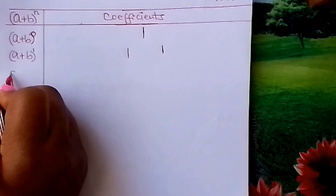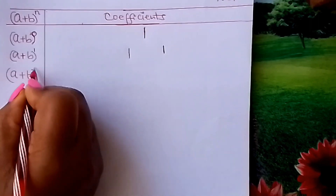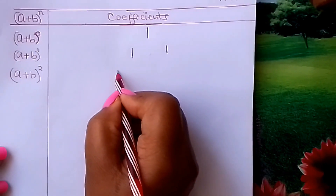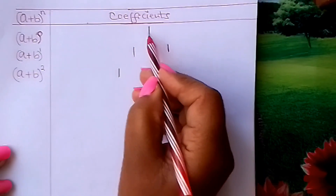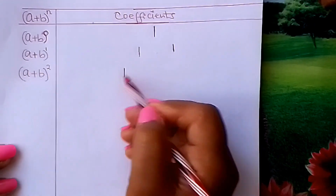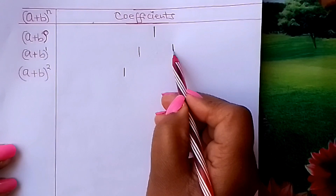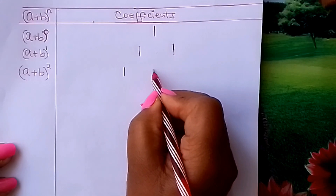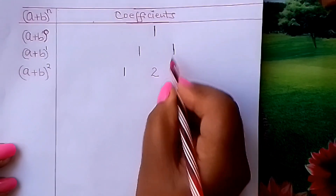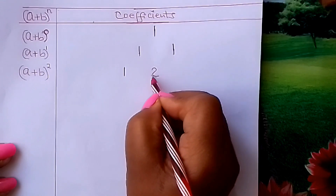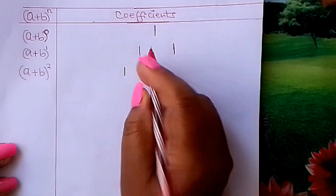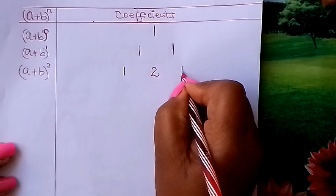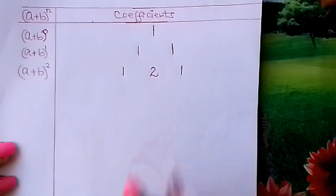(a + b) raised to 2 — what will it be? You come and start with your 1, and you maintain the slanting pattern of 1s there. Then add the 2 above: 1 plus 1 gives us 2. You come and fix it in between those 2 but down here. Then finally, fix a 1 there in a slanting manner.